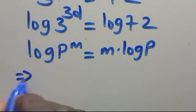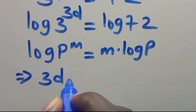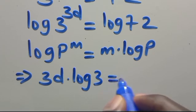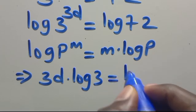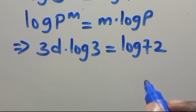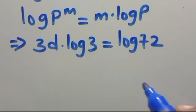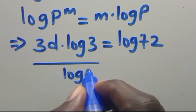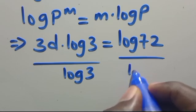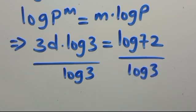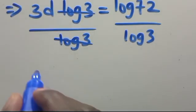Applying that rule, we have 3D multiplied by log 3 equals log 72. Now let's divide through by log 3.